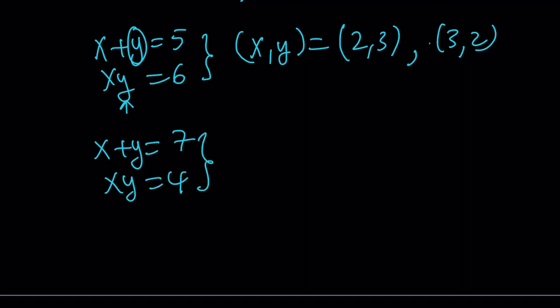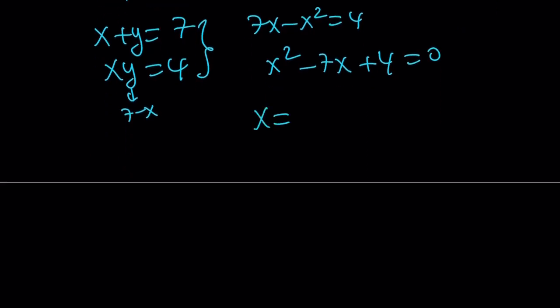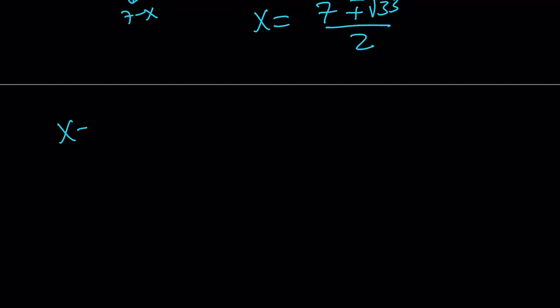And if I have the sum of 7 with the product of 4, things aren't that easy here. Let's go ahead and turn this into a quadratic equation. So I can basically replace y with 7 minus x here. And this becomes 7x minus x squared equals 4. Or x squared minus 7x plus 4 equals 0. And from here I get the following solutions. x equals 7 plus minus square root of 33 over 2. Now here's what this means.